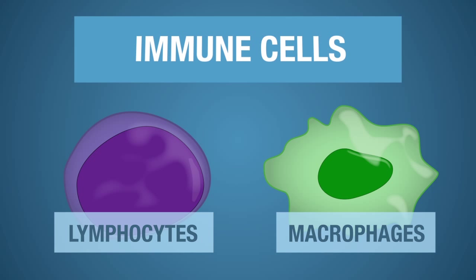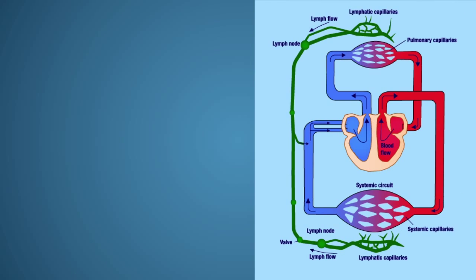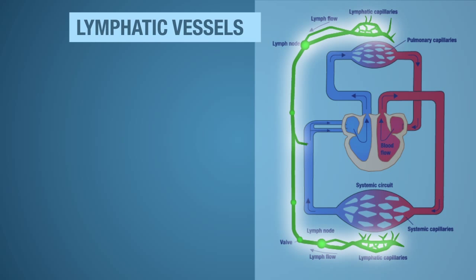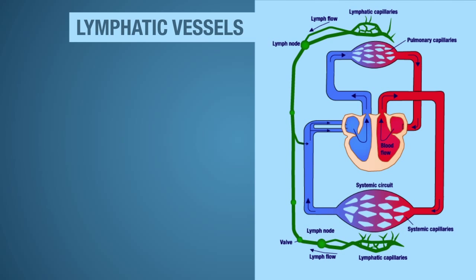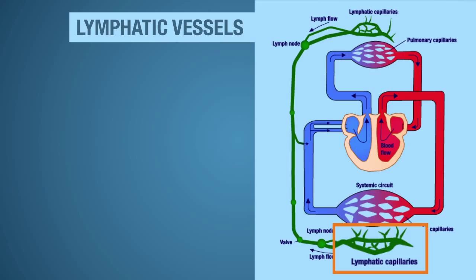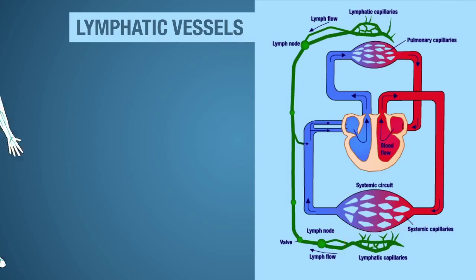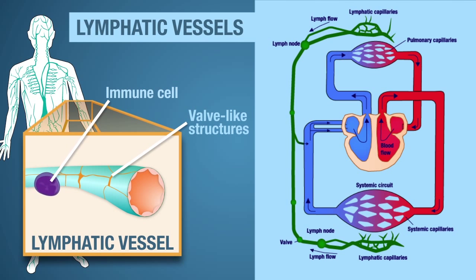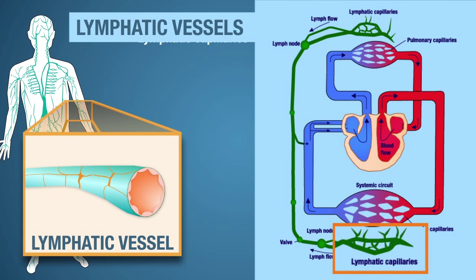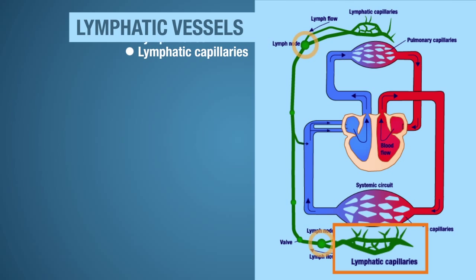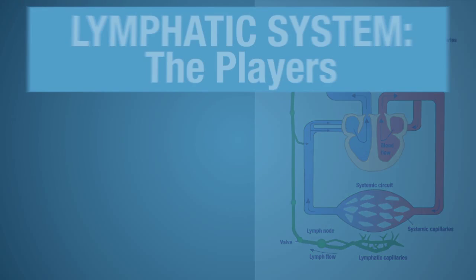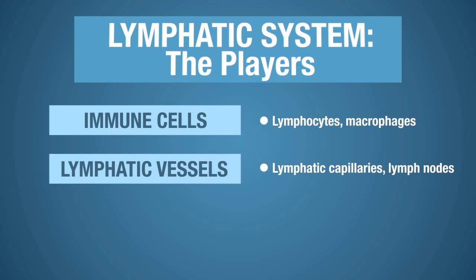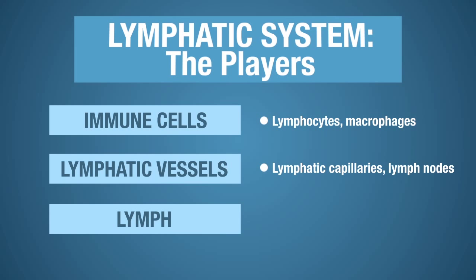The next players in the system are the vessels. In this diagram, the green structures represent the lymphatic system. The lymph nodes are connected to lymphatic vessels, and the lymphatic capillaries are an example of a lymphatic vessel. Here is a lymphatic vessel, a lymphatic capillary, and a lymph node. The last player in the lymphatic system is the fluid, called lymph — simply stated, the fluid within the lymphatic system.